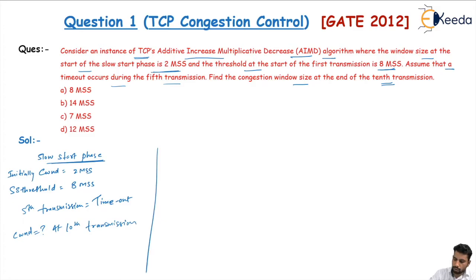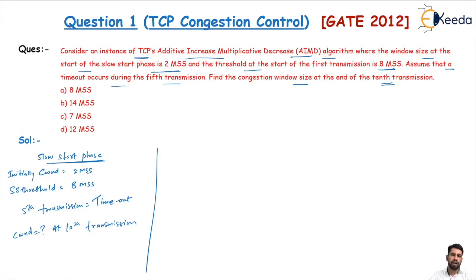I will show this in a short manner. In congestion control questions you will get a high number of transmissions — more than 10, 15, or 20 — so you don't need to draw a large diagram for everything. We can solve this with some simple techniques.